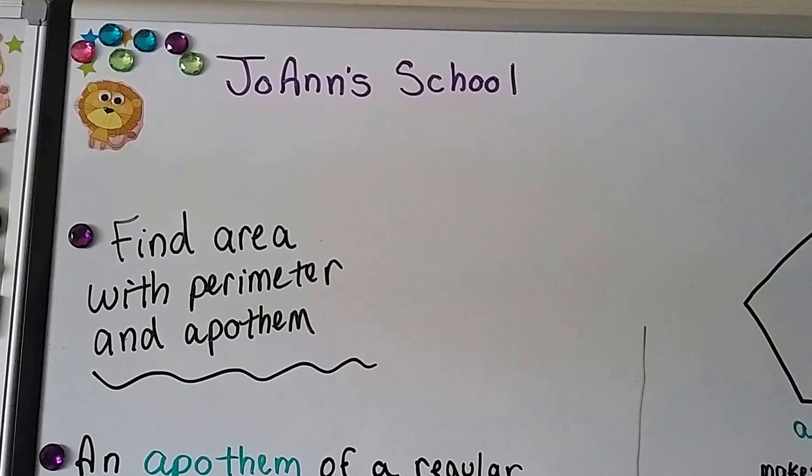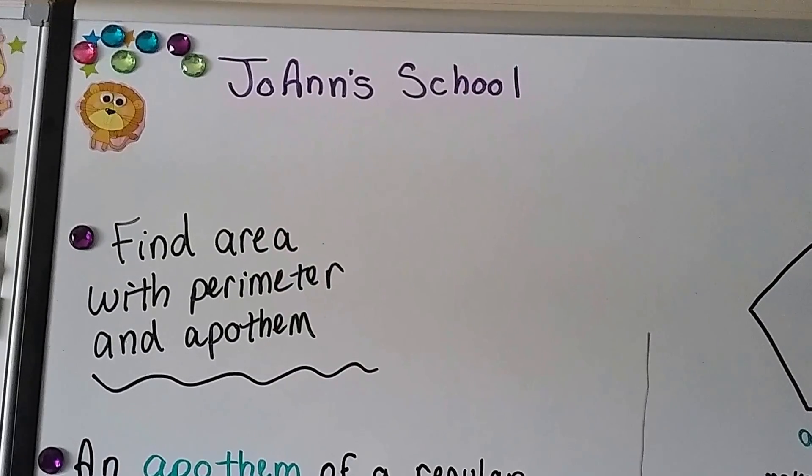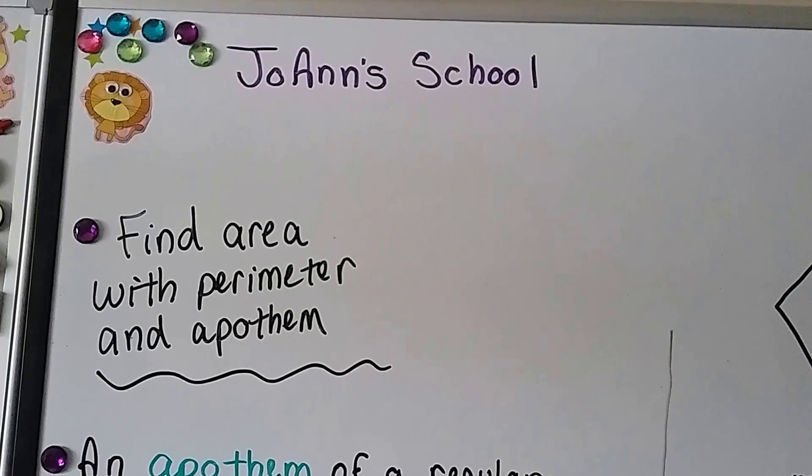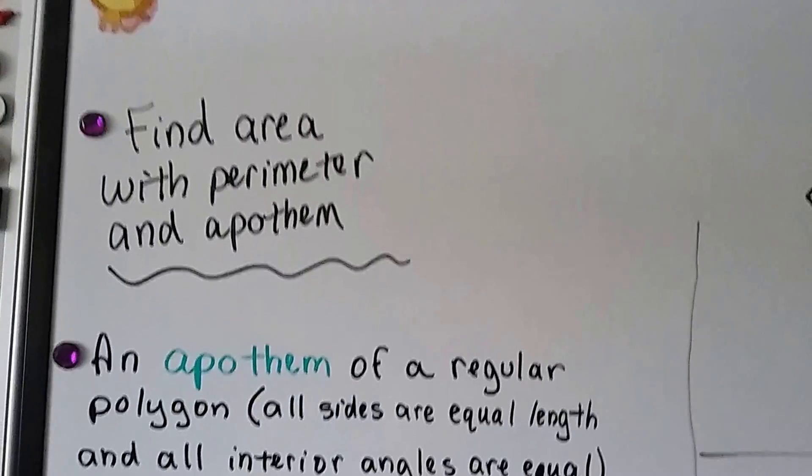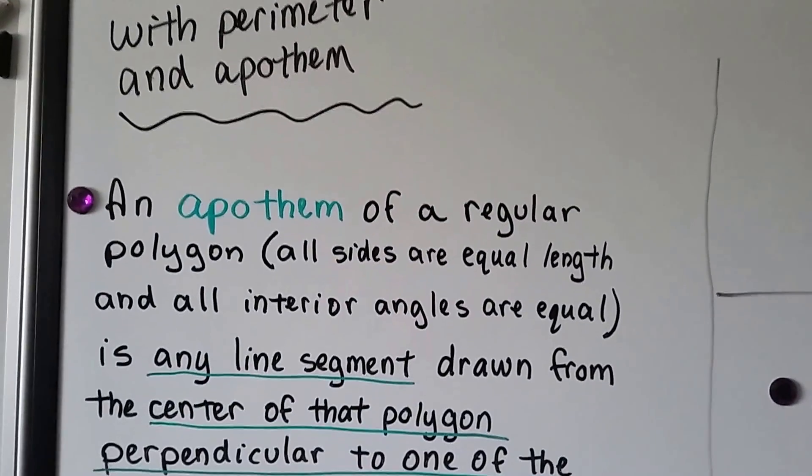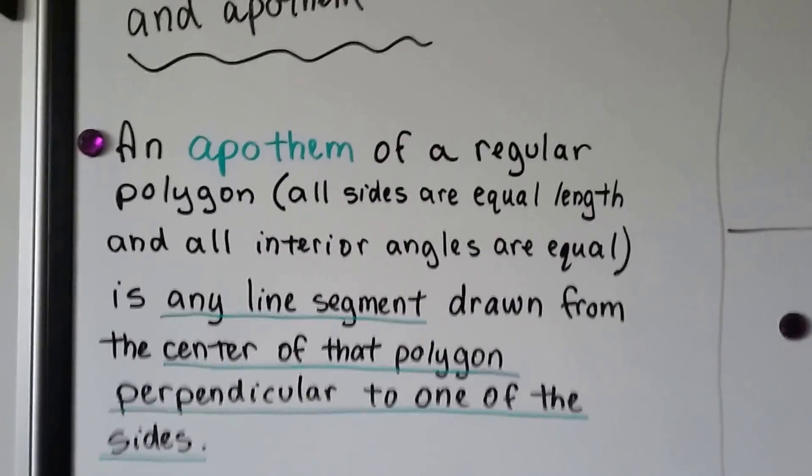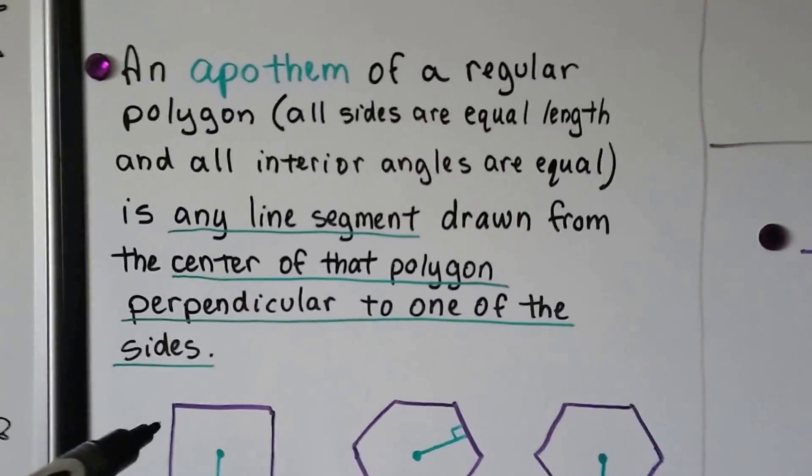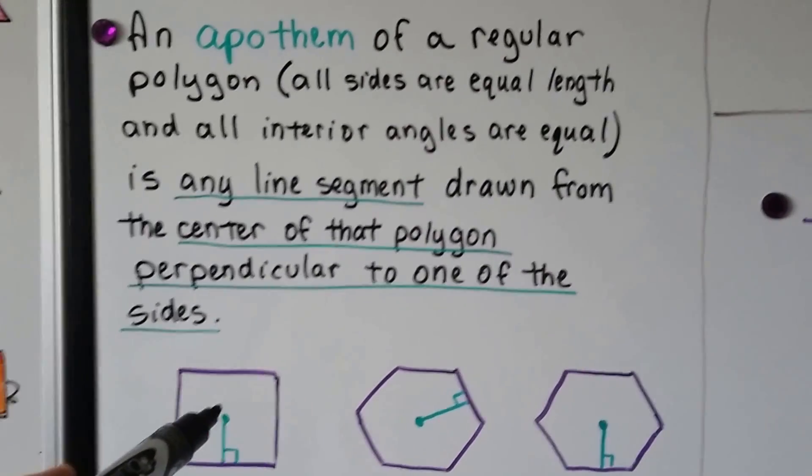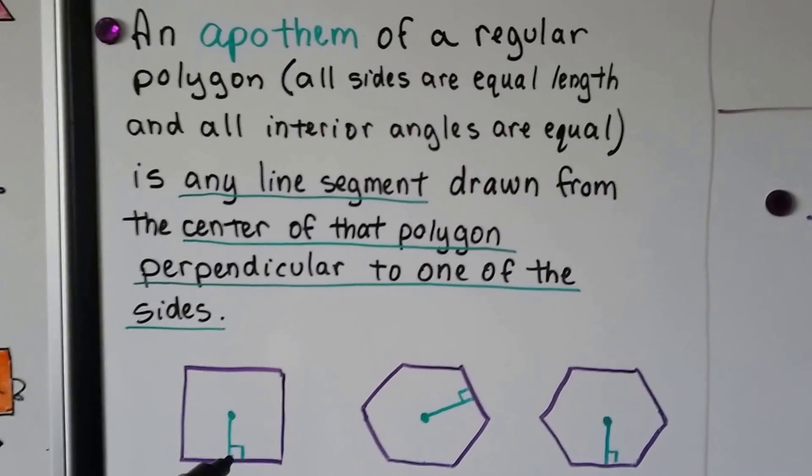I'm going to show you a very easy way to find the area of a regular polygon if you know its perimeter and its apothem. So first of all, an apothem of a regular polygon is any line segment drawn from the center of that polygon perpendicular to one of its sides.